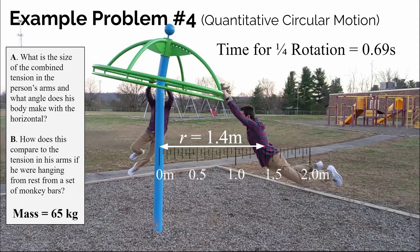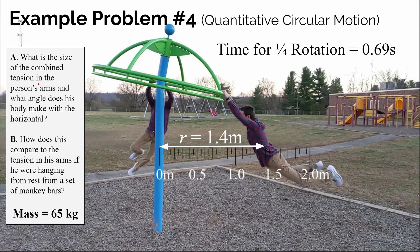With that information and my approximate mass being 65 kilograms, we can answer the questions. Part A: what is the size of the combined tension in my arms, and what angle does my body make with the horizontal? And part B: how does this compare to the tension in my arms if I were just hanging from rest on a set of monkey bars?